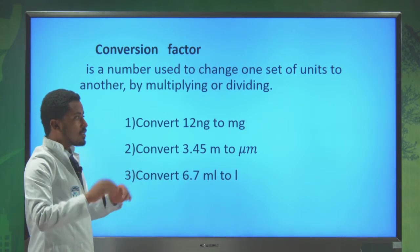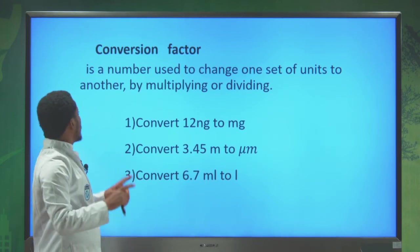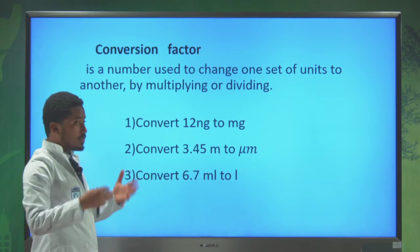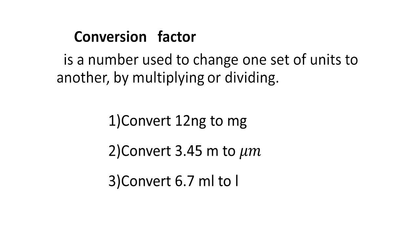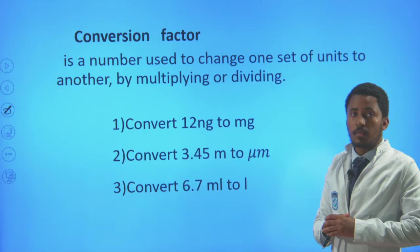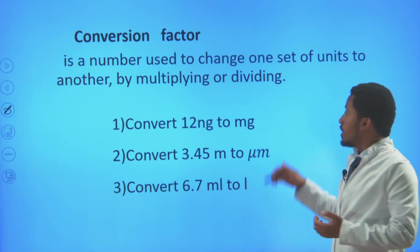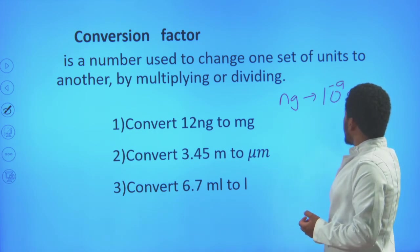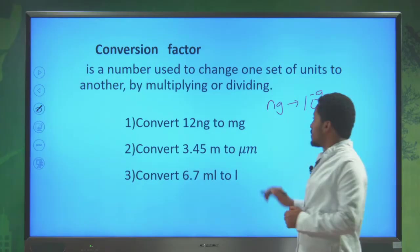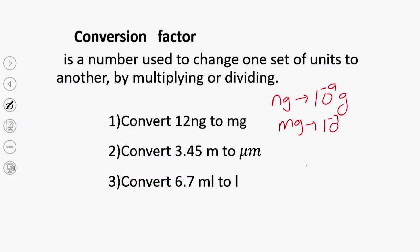We use a systematic order called conversion of factor. A conversion factor is a number used to change one set of units to another, either by multiplying or dividing. For example, let us convert 12 nanograms into milligrams. First we need to know that a nanogram means 10 to the power of minus 9 grams, and a milligram means 10 to the power of minus 3 grams.